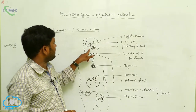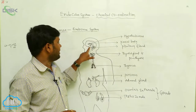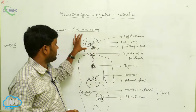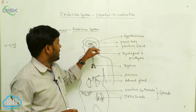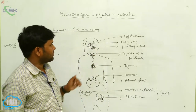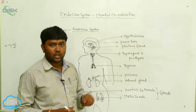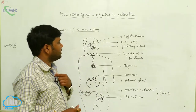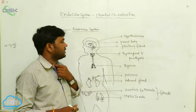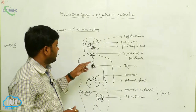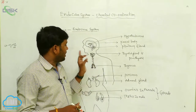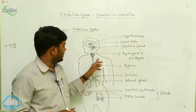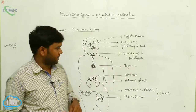The main gland is the pituitary gland, located in the brain — the head region. Another one of the most important glands is the hypothalamus. Going down to the pharynx area, one of the other endocrine glands is the thyroid gland. Another one is the parathyroid gland.